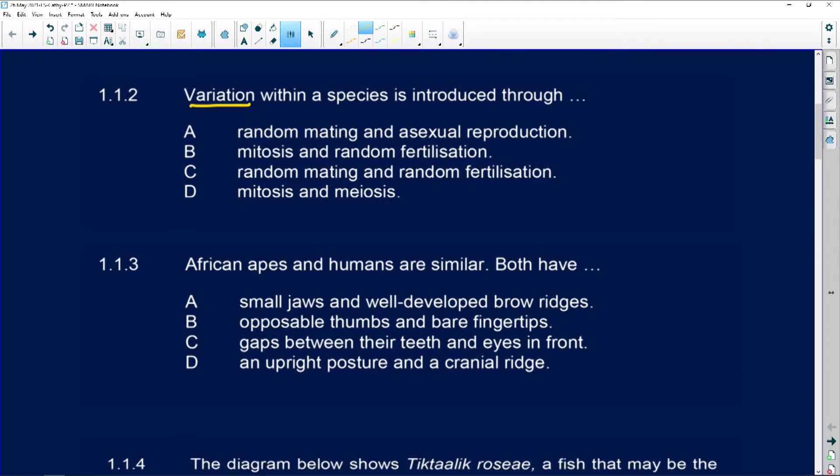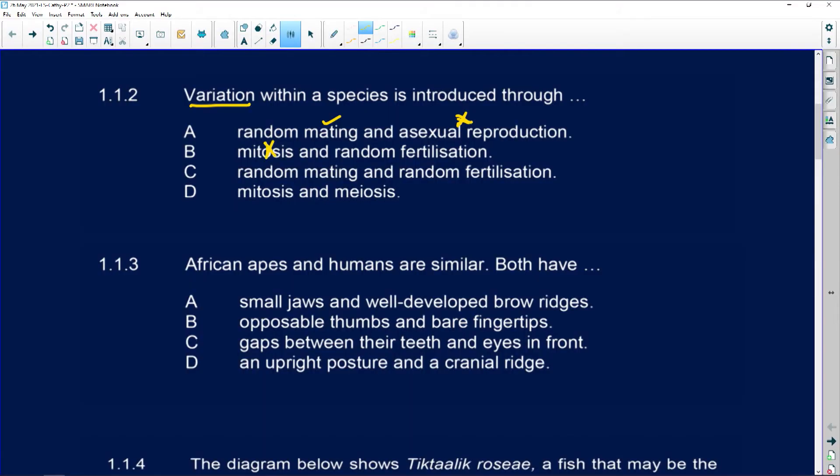Then variation within a species is introduced through what? You've got random mating and asexual reproduction. That is incorrect, because variation doesn't come from asexual reproduction. With sexual reproduction, you've got the genetic makeup of the male and the female, and they combine, so there's variation to create the offspring. When it's asexual reproduction, it is a form of mitosis, which we then call binary fission. That's the way bacteria multiply. So we know mitosis, it is not. Random fertilization is correct. Random mating is correct. Random fertilization is correct. And mitosis also causes variation. So which of these has two ticks? It is C.